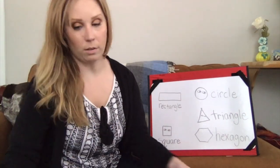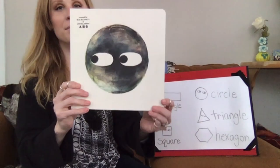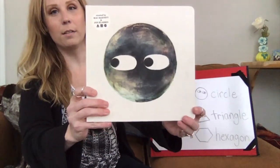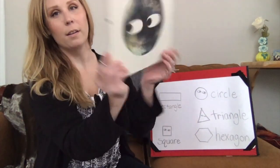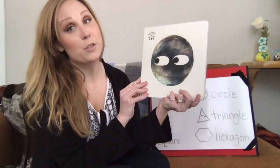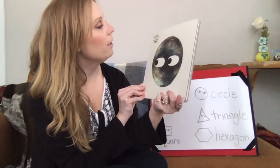The book is called Circle. This is the front cover. This is the back cover. It was written and illustrated by two people, Mac Barnett and John Classen.